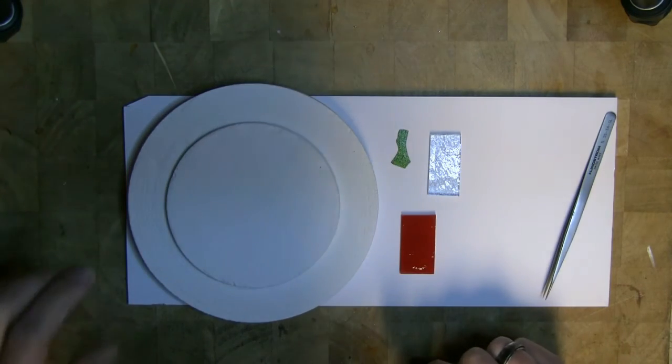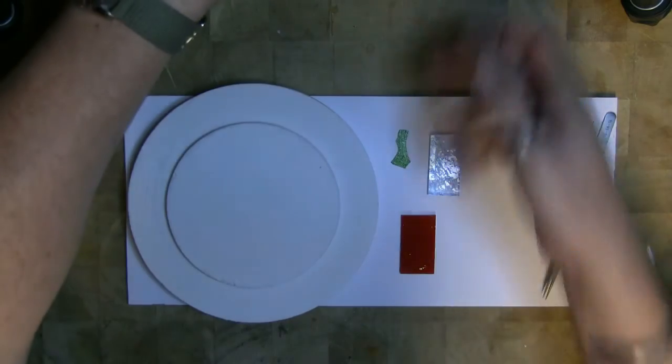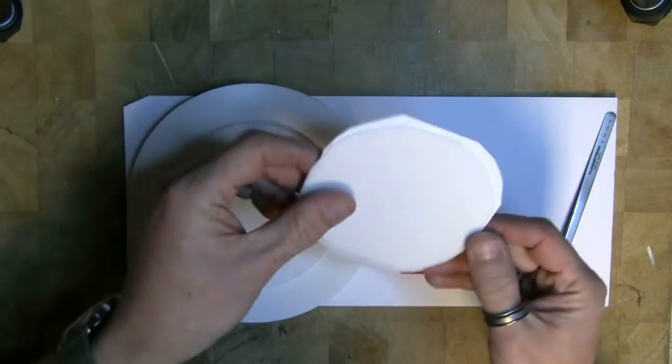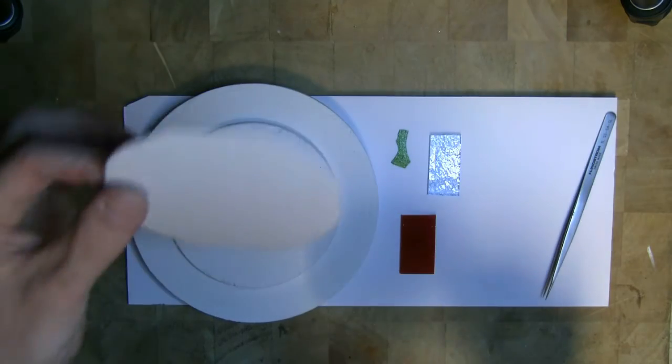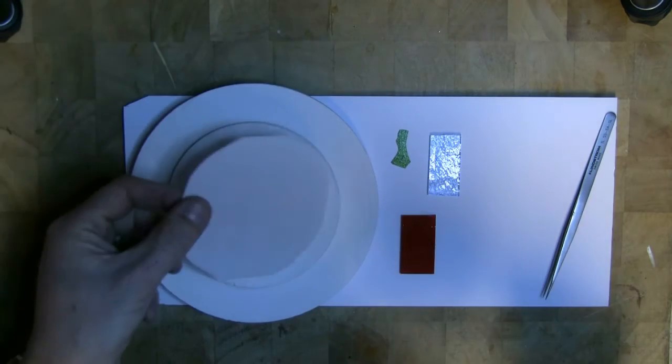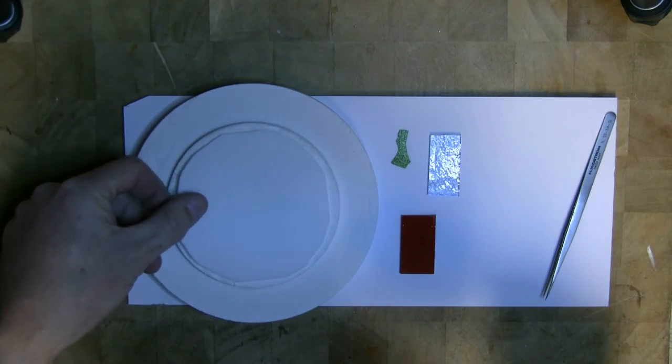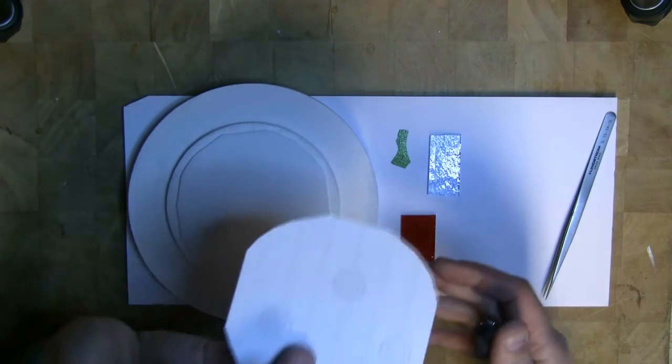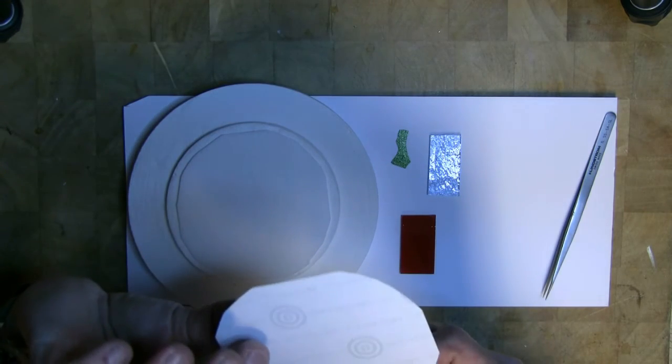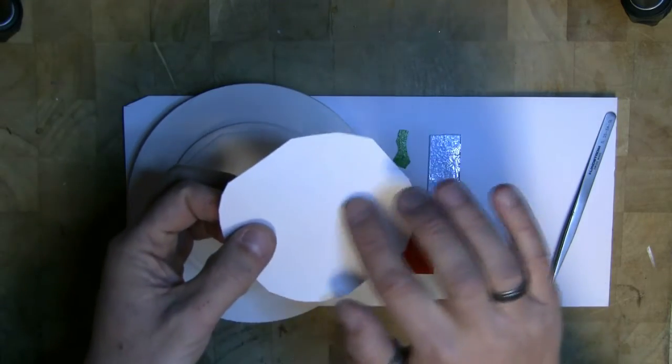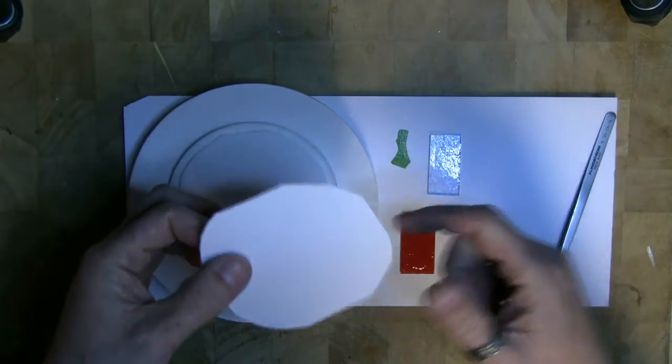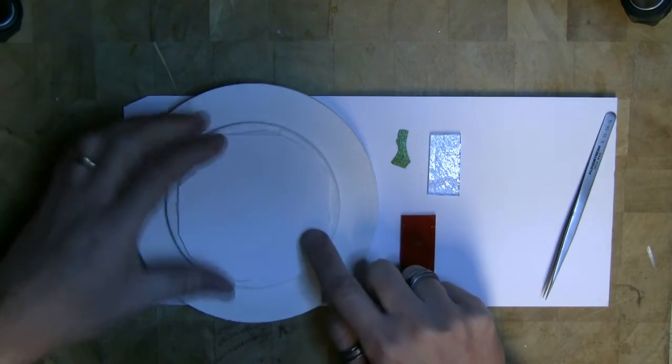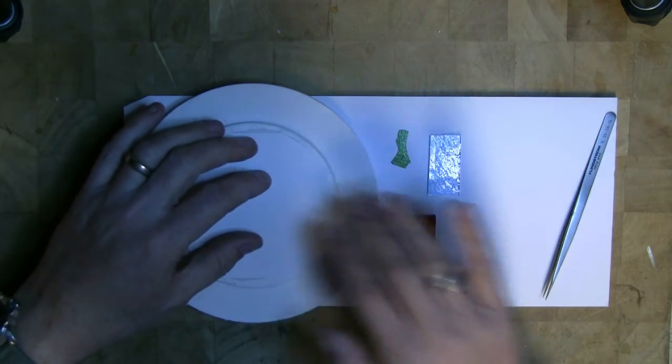Before you can put any glass on, you get supplied with some fiber blanket stuff. This acts as a thermal insulator, so you pop that on there. Then you get fiber paper which says this side down. This gives a nice smooth surface so you don't get an unpleasant texture on the bottom of the glass when you fuse it.